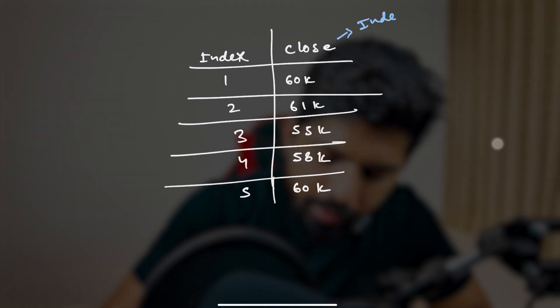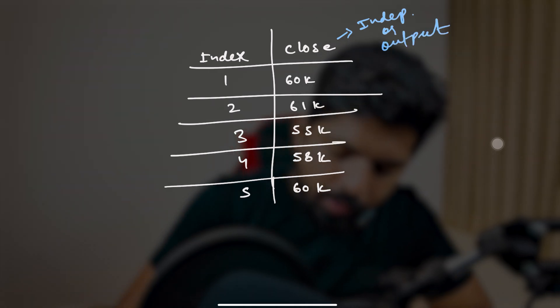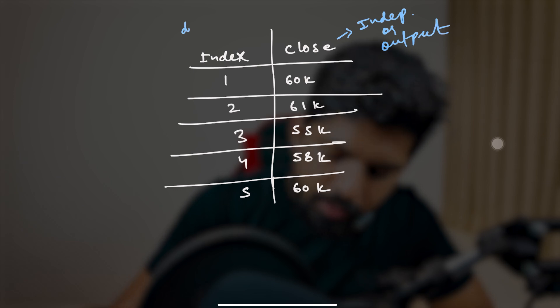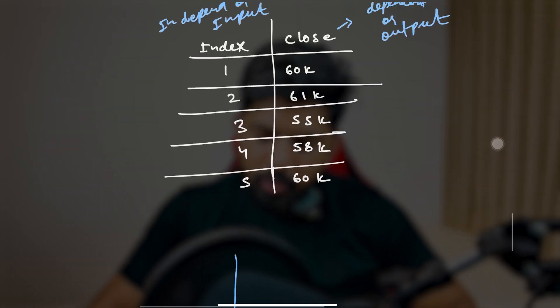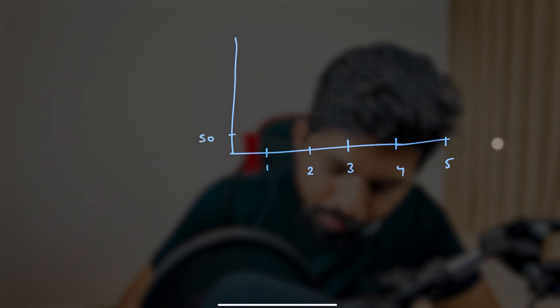First let's understand some terms. In simple linear regression we have two variables: one is the input, also known as the independent variable, and one is the output, also known as the dependent variable. When you work with these kinds of algorithms you have to visualize things, so you draw a scatter plot. On the x-axis we have days one through five, and on the y-axis we have price values from 50 to 65.